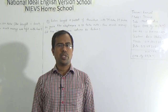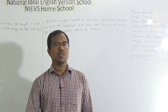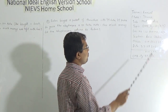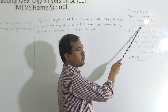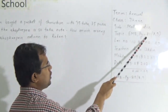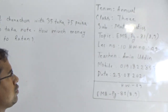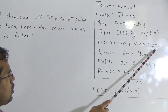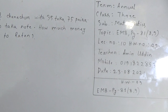Dear students, today I am going to take a math class for the students of Class 3. Our today's topic is Elementary Mathematics book, page number 81, question number 8 and 9. This is lesson number 10 and SW number 9. Now let us start our today's class.